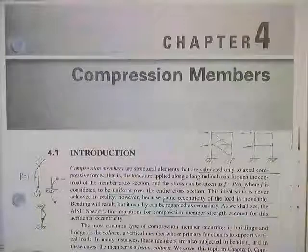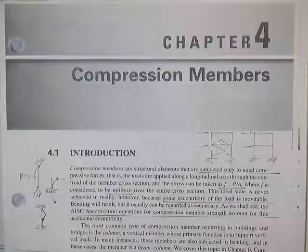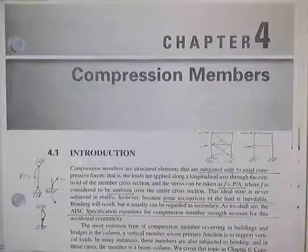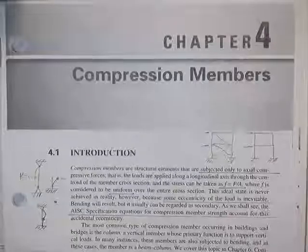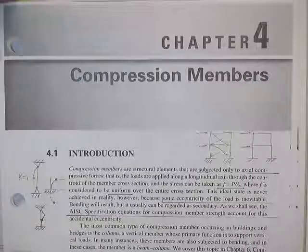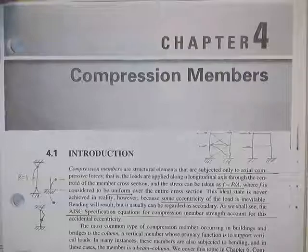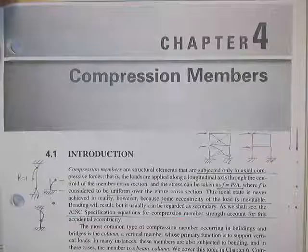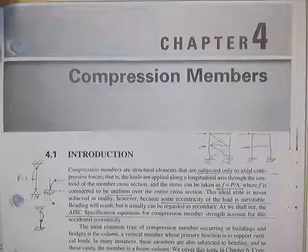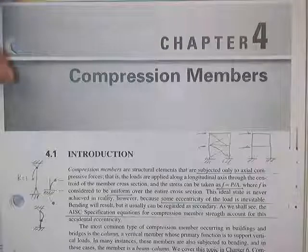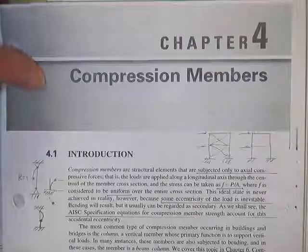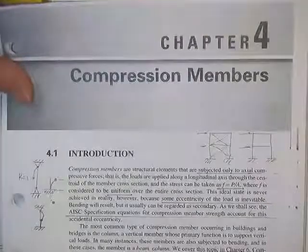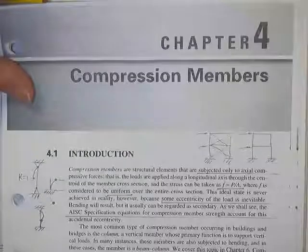Those are tension members. Now, compression members have one more aspect to them. They can still fail just due to pure compression if they're nice and short. But once they start getting long, you have problems with the section buckling. We already did some buckling in 3.05.